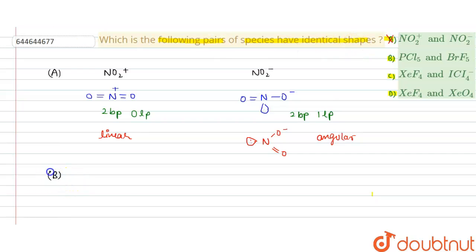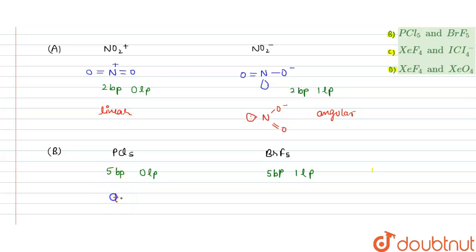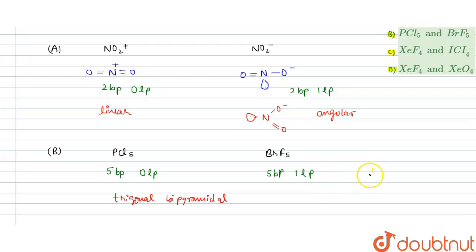Now we check option B. In option B the species are PCl5 and BrF5. PCl5 has five bond pairs and zero lone pairs because phosphorus has only five outermost electrons, giving it a trigonal bipyramidal shape. BrF5 has five bond pairs and one lone pair, since bromine has seven electrons and five are used in bonding, leaving one lone pair.